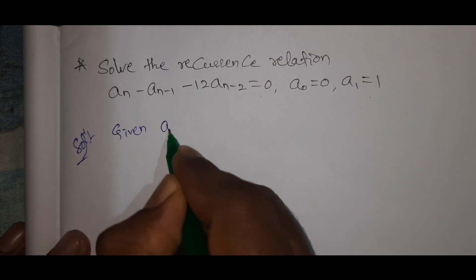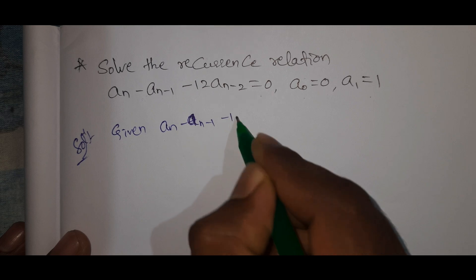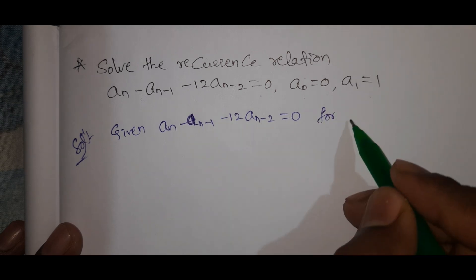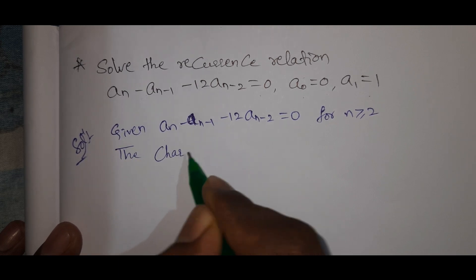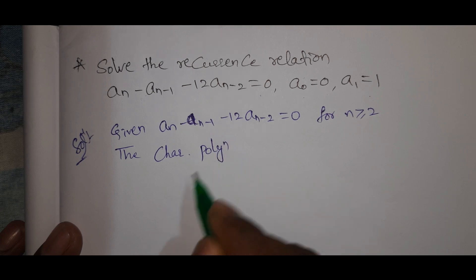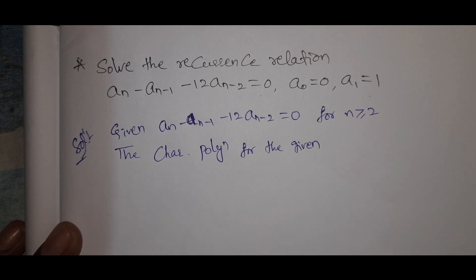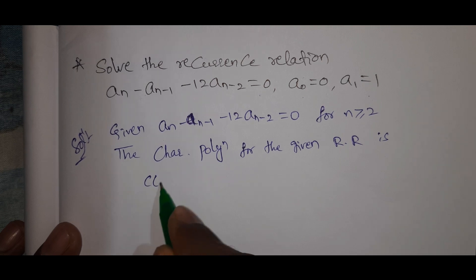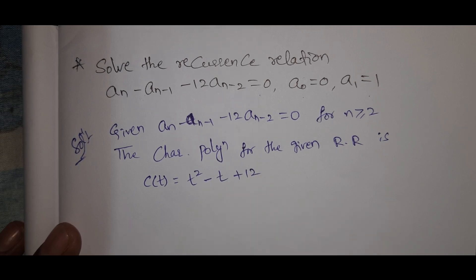Given: a_n minus 7a_{n-1} minus 12a_{n-2} equal to 0, for n greater than or equal to 2. The characteristic polynomial for the given recurrence relation is c(t) equal to t squared minus t minus 12.